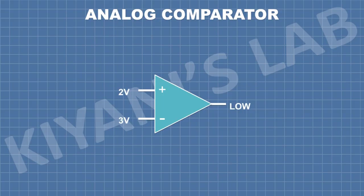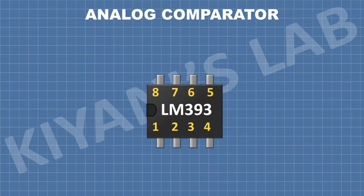The output of the comparator will be low if the voltage at the positive input is less than the voltage at the negative input, and the output will be high if the voltage at the positive input is greater than the voltage at the negative input.